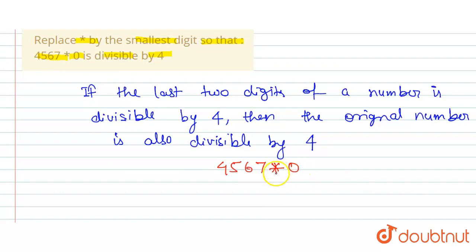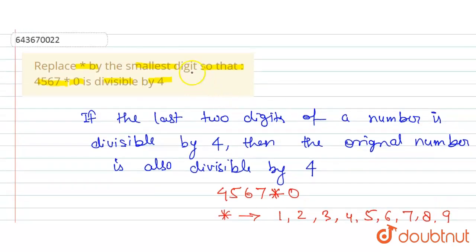If star can be replaced by the following numbers: 1, 2, 3, 4, 5, 6, 7, 8, or 9. The question is asking for the smallest digit, so we will start by checking 1.